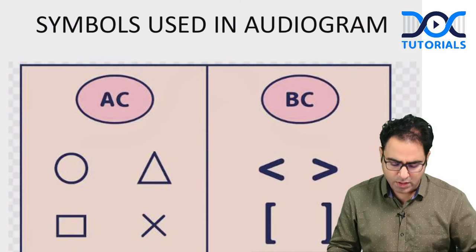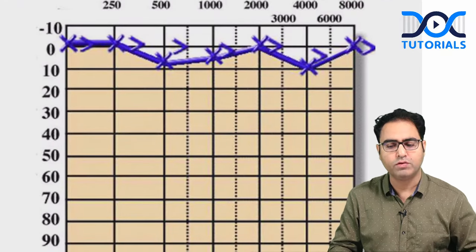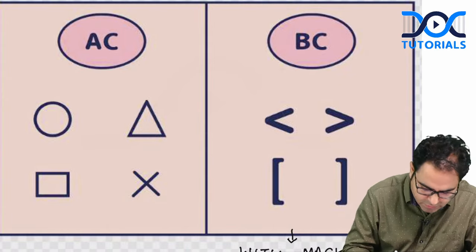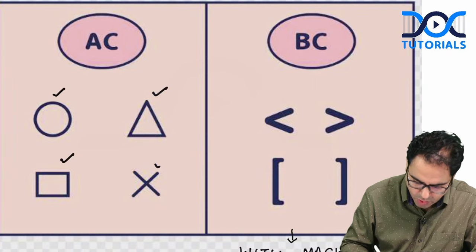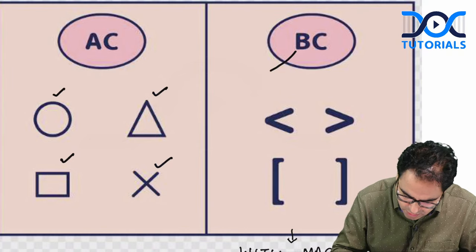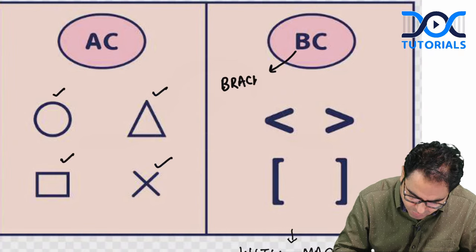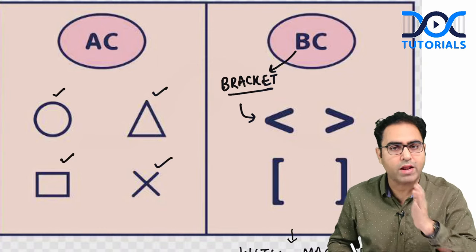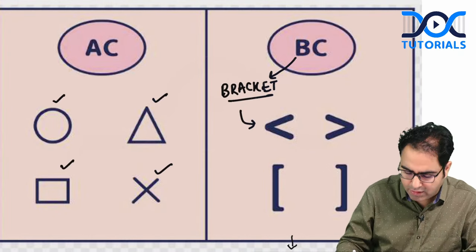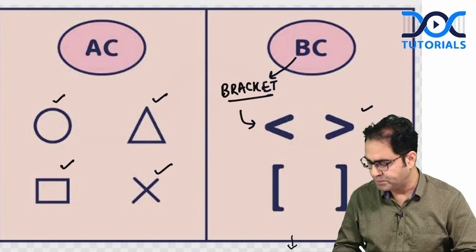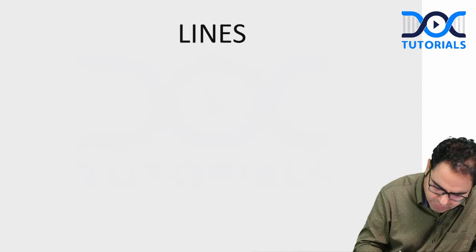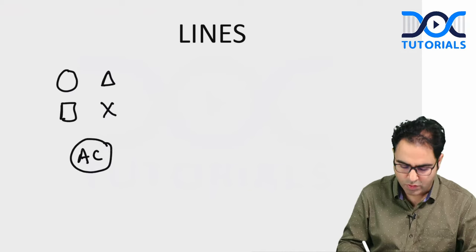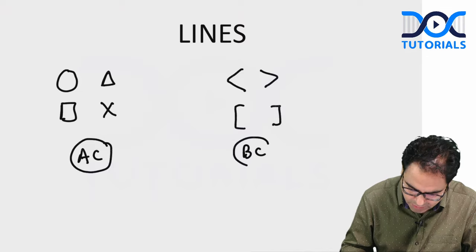There are specific symbols used in the audiogram. Circle, triangle, square, and cross are air conduction symbols. Any bracket-like symbol represents bone conduction — remember B for bracket. Air conduction symbols are connected with a continuous line. Bone conduction symbols are connected with a broken line — B for broken, B for BC. Blue color lines represent the left ear; red color lines represent the right ear. These are international norms followed by all audiologists.